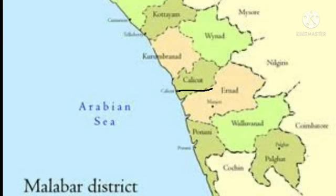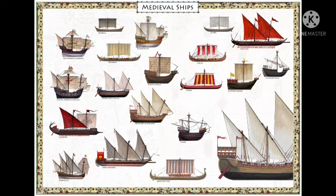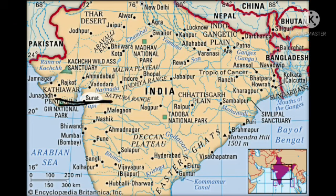Calicut was an important commercial center and a seaport of the Silk Route. Ships from Central Asia and Europe anchored at Calicut to load them with spices. Surat in Gujarat was another trade center.